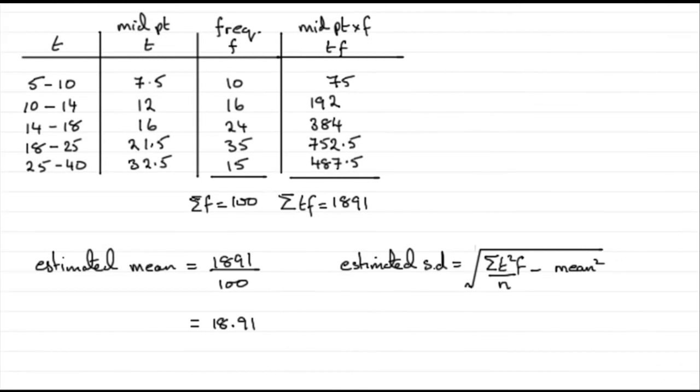Now this next part we've got to estimate the standard deviation, and to do that you should be aware of this formula: it's the square root of the sum of the squares, that's t squared f over n, n being the total number of values we've got, the total frequency, and then you subtract the square of the mean.